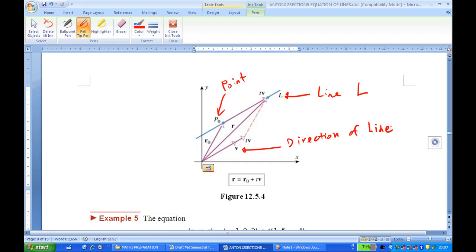Then the vector equation of a line is given by r = r0 + tV, where r0 is the point P0, and V is the vector in the direction of the line, where t is the parameter in this case.